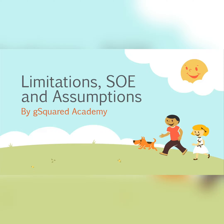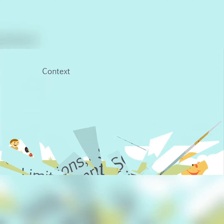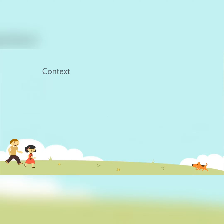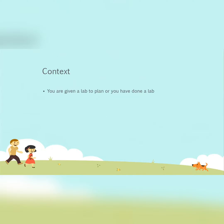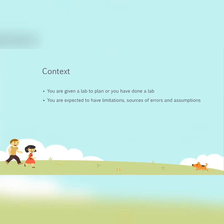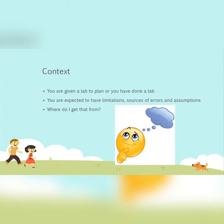So here's the context: you have a lab to write, or you have written up a lab — usually a planning and design lab — and now you need to write your limitations, sources of errors, and your assumptions. So where do you get these things from? How do you find them and get that information?